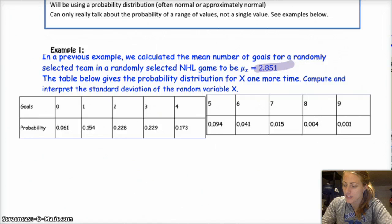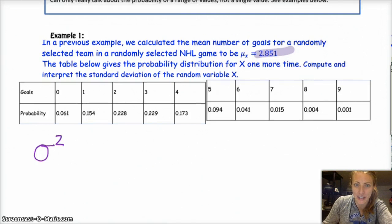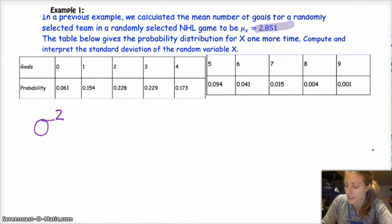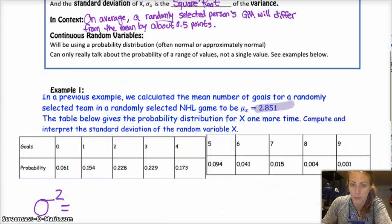So in this case, we already have the mean, which is 2.851. And so our standard deviation, let's actually start with the variance because that's a little easier to deal with, so we don't have to look at square roots yet. We can just take the square root at the end. So it's, remember from up here, it's your x value minus your mean, squared.